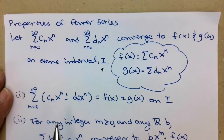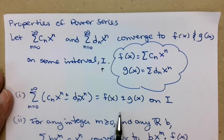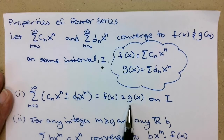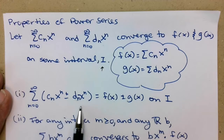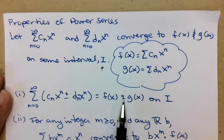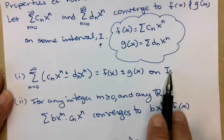Here's how we can combine power series. We can do a sum or a difference — we can add or subtract the two, and it will converge to the sum or difference of the two functions. Going backwards, if we have the sum of a couple of functions, we can come up with multiple power series that will approximate our functions on that interval i.